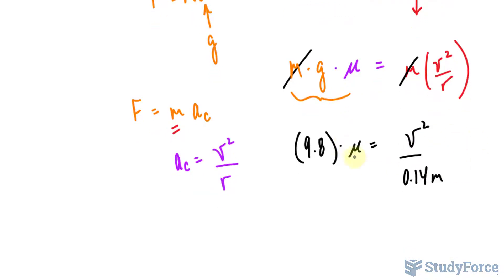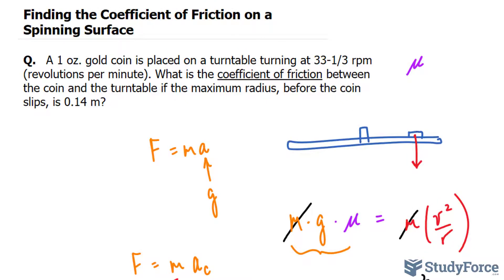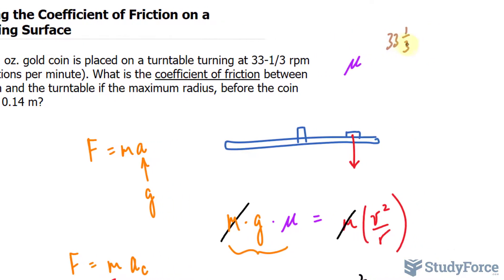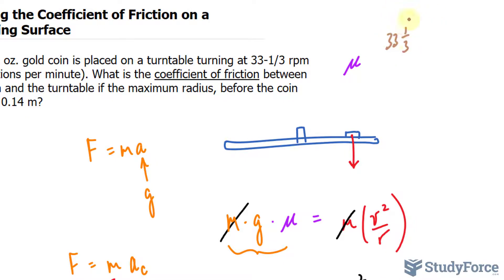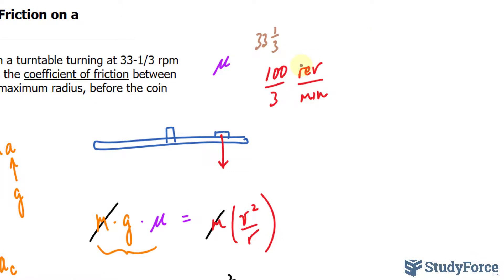Now how do we find V so that ultimately we can solve for mu? V is velocity, and velocity is a measure of distance over time, so meters per second. What we are told in the question is that the turntable turns at 33 and a third RPM. So 33 and a third. I don't like working with mixed fractions, so I'll change this into an improper fraction by multiplying 3 times 33 plus 1. That's the trick. 3 times 33 is 99 plus 1 is 100 over 3 RPM, revolutions per minute. Let me write that down for you. So this is revolutions per minute. Essentially you can even say that it's 100 revolutions per every 3 minutes. So we need to make revolutions per minute into meters per second.